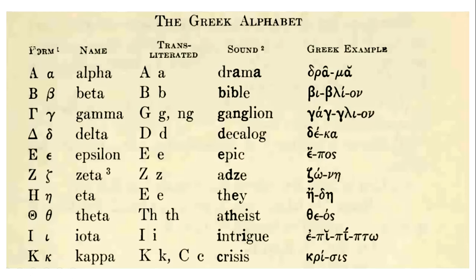Now we'll begin with the Greek alphabet, which interestingly is explicated in this textbook through examples we have in English that are often just taken from the Greek words themselves, which makes it particularly easy to remember how these are to be pronounced. So we have the first letter of the Greek alphabet, which is quite famously alpha.